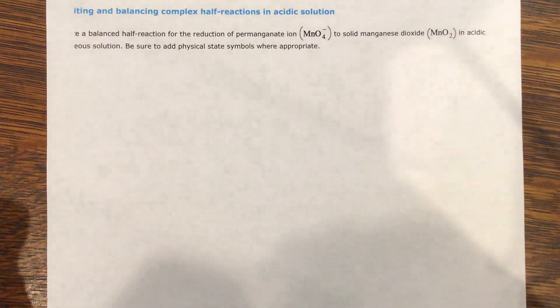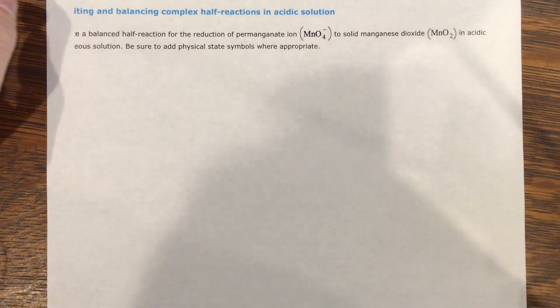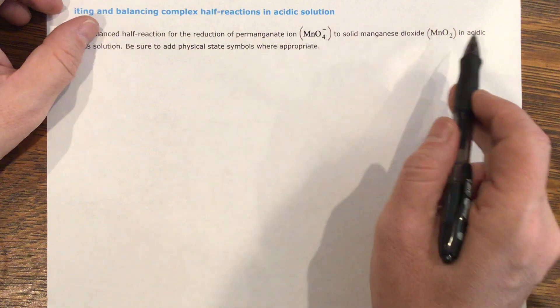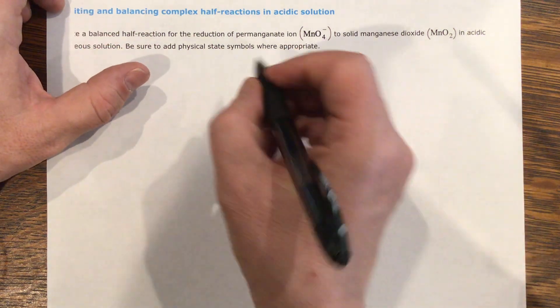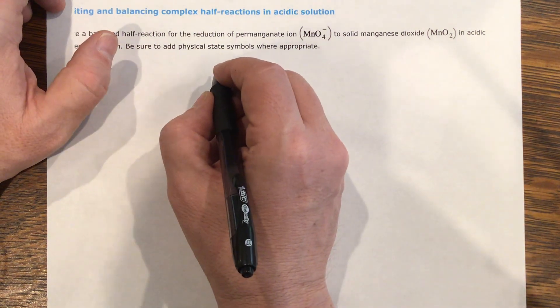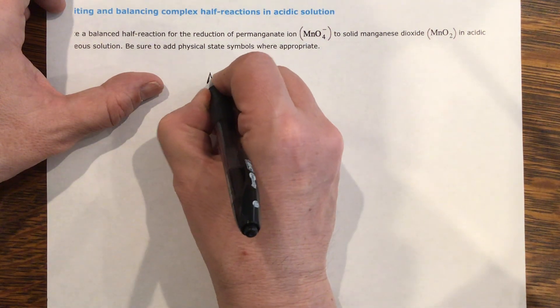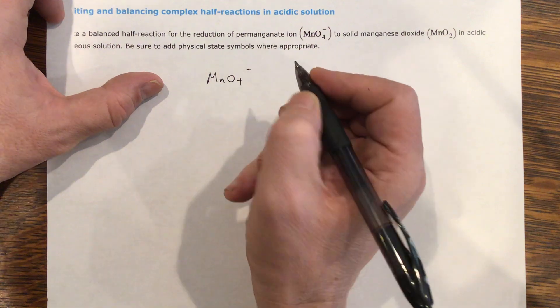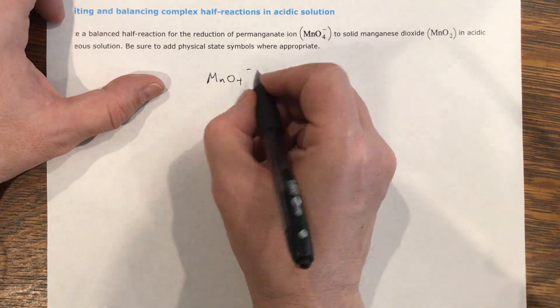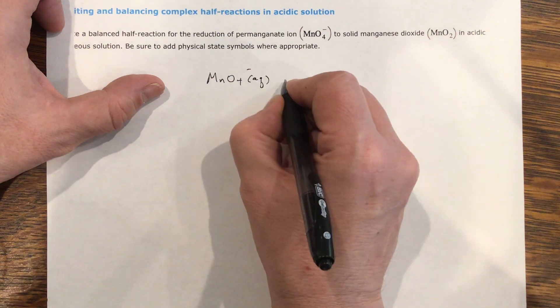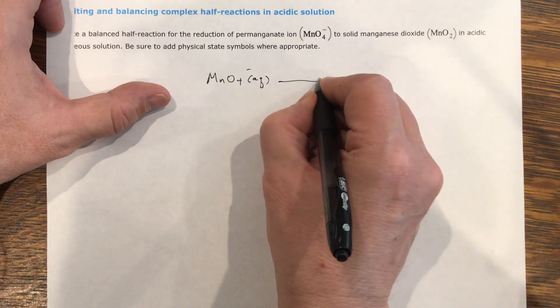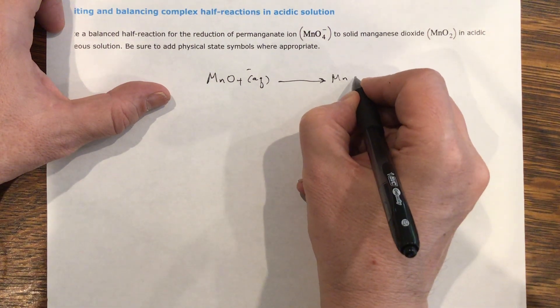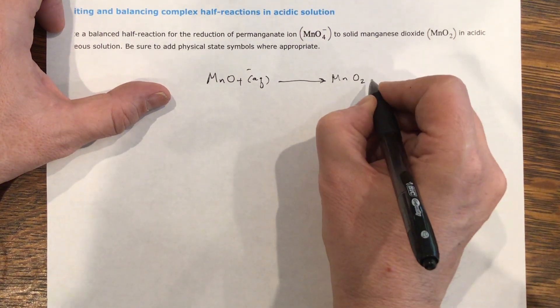It's going to give you in words what's going to happen. We're going to reduce permanganate into manganese oxide. They've already told you that it's going to be a reduction. So I'm just going to write here MnO4 negative, and it's an ion. Ions are aqueous, and it is going to go to solid manganese oxide.